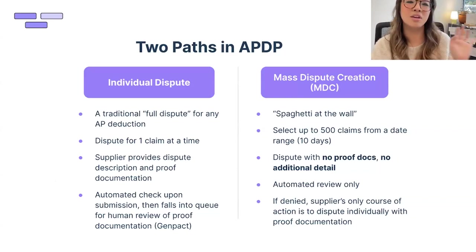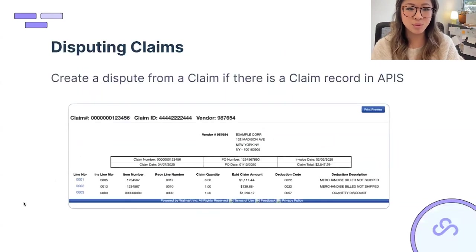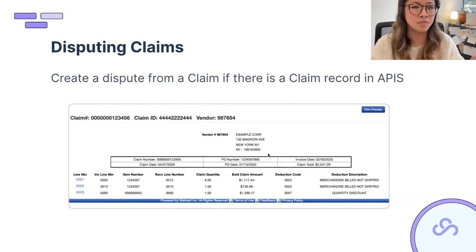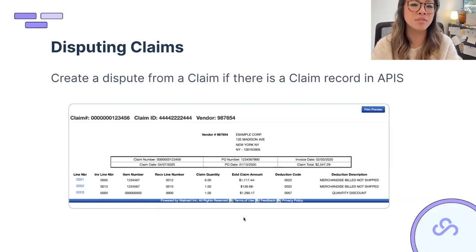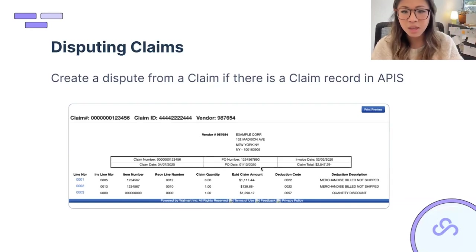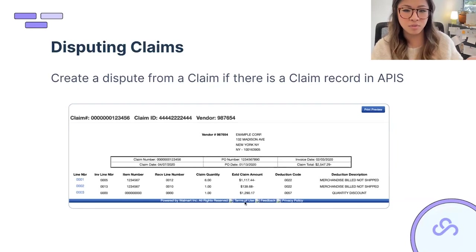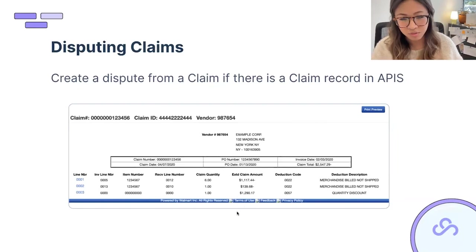Our general recommendation: submit correctly the first time so you're not handling denials or cancellations a second time. To create a dispute from a claim, there must be a record in APIS. In APIS you'll see negative dollar amounts with deduction codes — for example, two Code 22s and one Code 57. You decide whether it's valid or invalid, and if you want to fight it, you create a dispute in APDP.